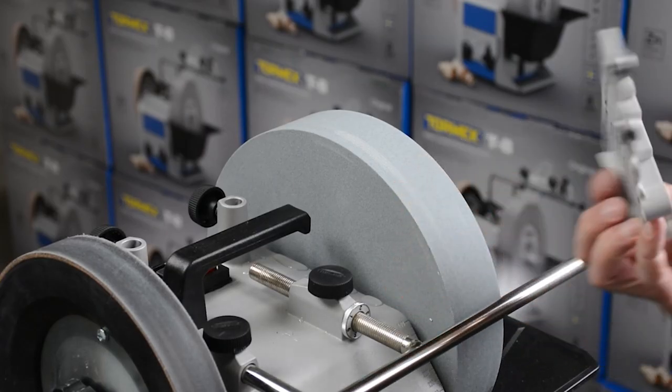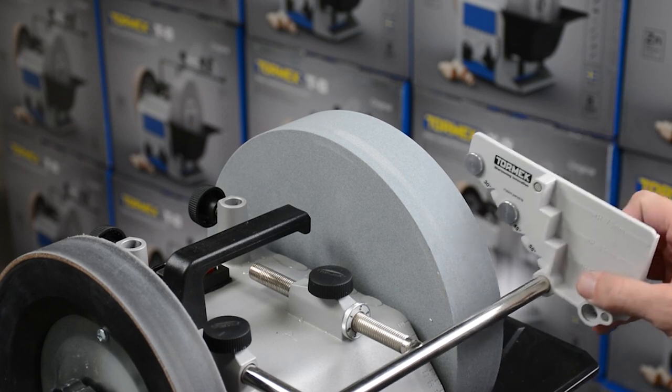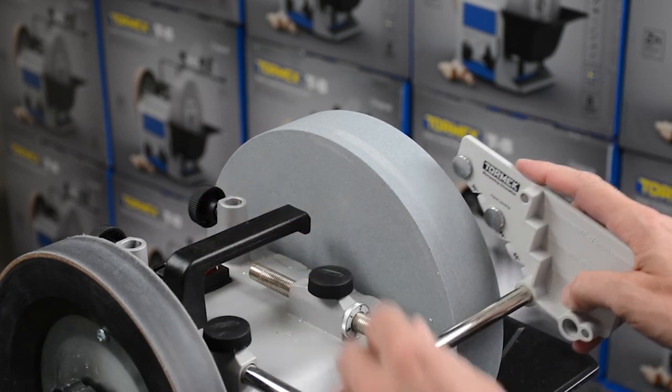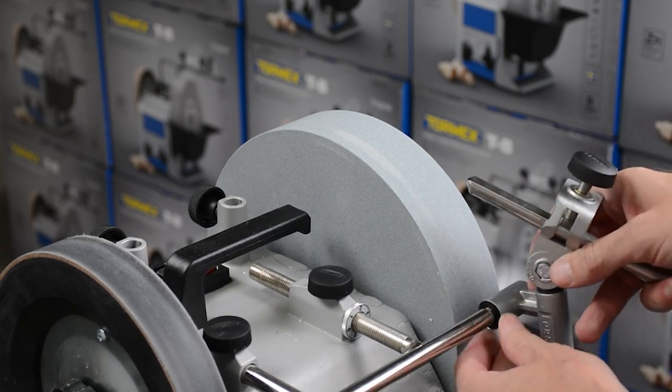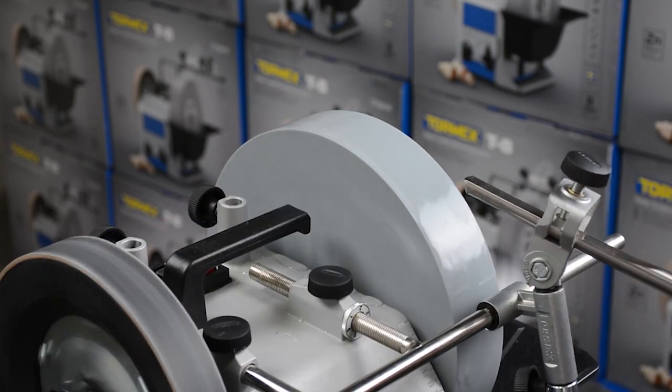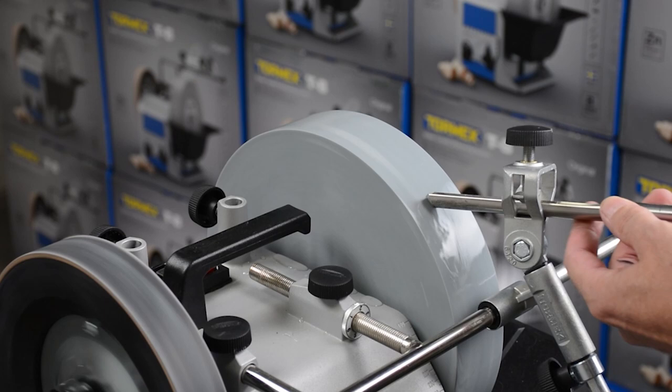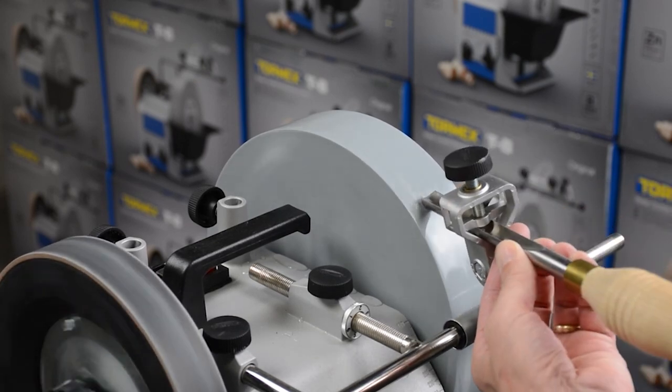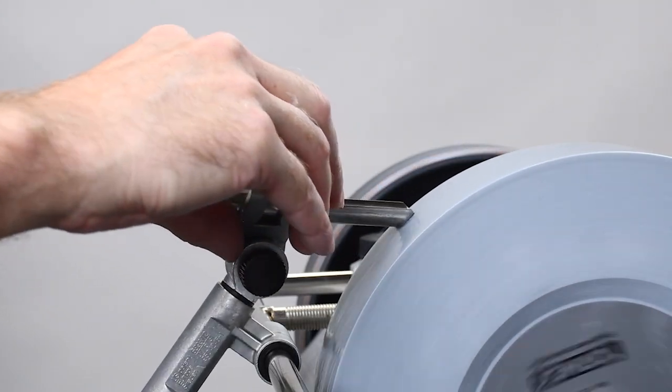Then use the TTS100 to set the proper distance of the universal support from the wheel. Move side to side across the wheel as you rotate the jig to achieve the desired geometry.